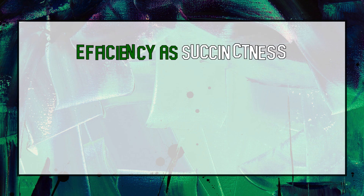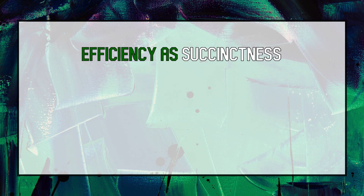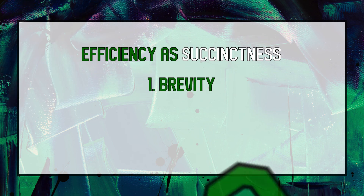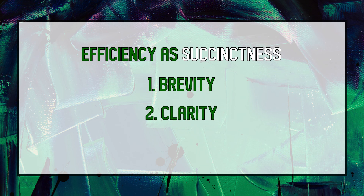It's therefore helpful to define efficiency as succinctness — using only the words necessary to convey an idea. Succinctness has two components: brevity and clarity. Brevity means using the fewest words necessary to express an idea. It comes from the Latin concept of brevitas, communicating an idea using only the minimum essential words — there's no filler or fluff, every word matters, and your words pack a punch. Clarity means using only the right words to express an idea. Words are chosen carefully to directly communicate exactly what you mean — there's no confusion. This is an important counterbalance to brevity: it's not just that you want to minimize the number of words, it's that you want to choose the right words.